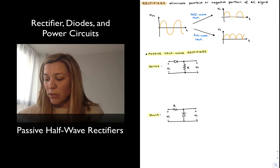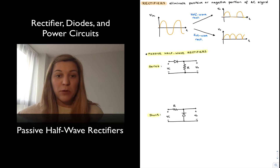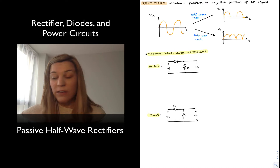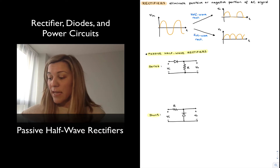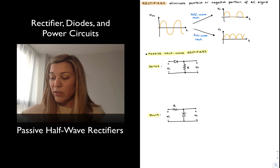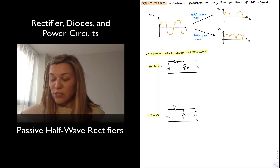So if we take a look at the picture here, we'll see the input waveform, which is an AC sinusoidal signal. If I run it through a half-wave rectifier, the output signal will be positive and essentially equal to the input signal whenever the input signal was positive. And then in those regions where the input signal was negative, the output signal is essentially zero.